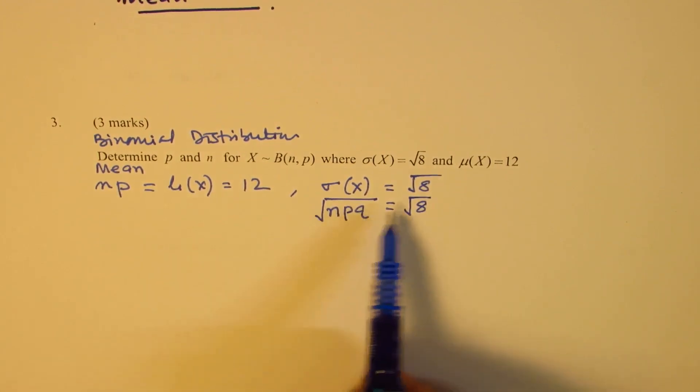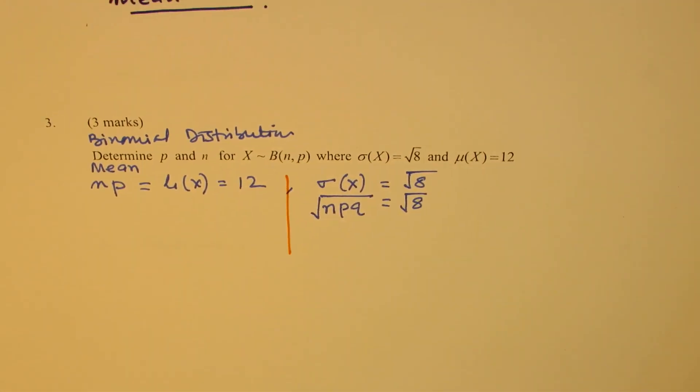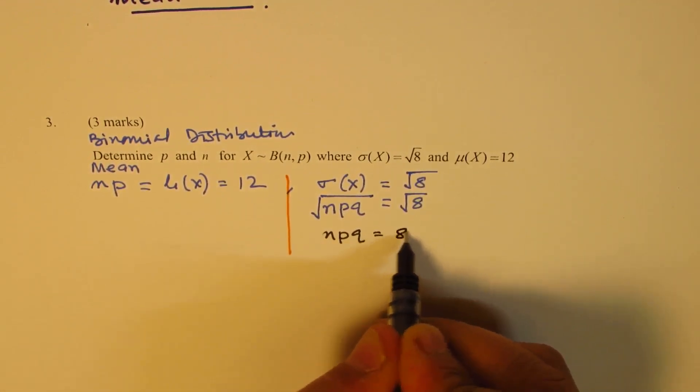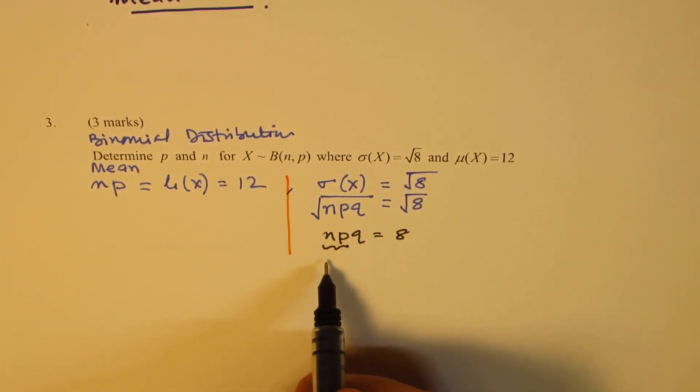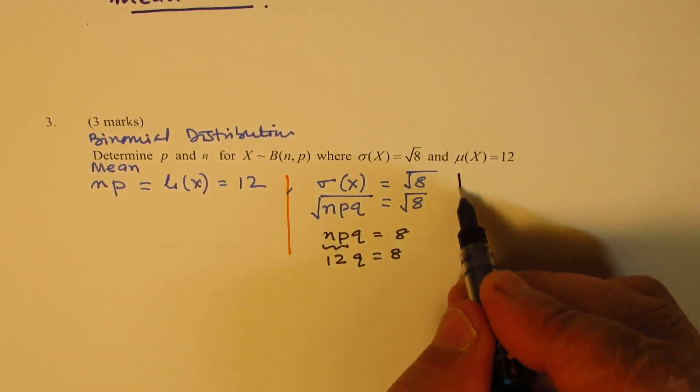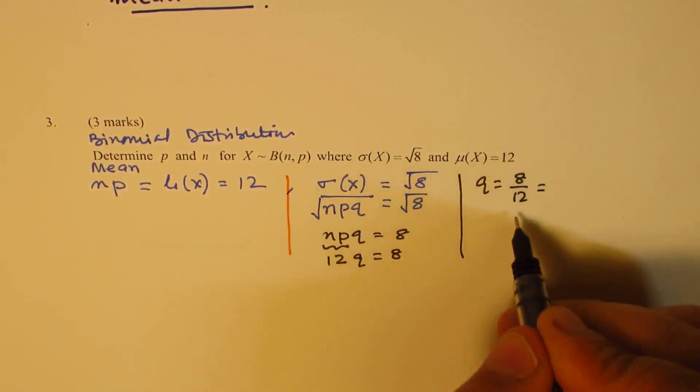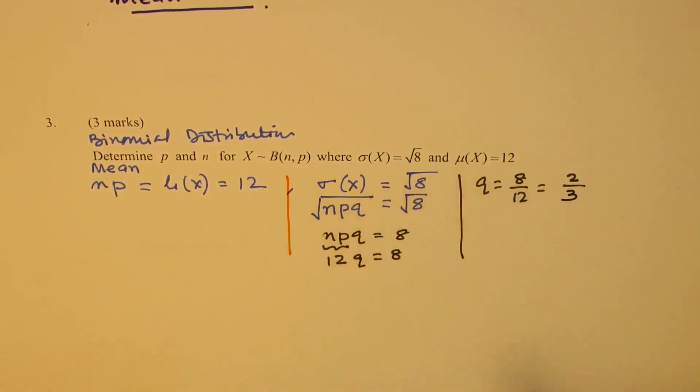Now from here, as you can see, we can actually solve for both NP since we have two equations. So we have NPQ equals 8, but NP is 12. Replacing NP with 12, we can write 12Q equals 8. From here we can solve for Q, which is 8 over 12. Dividing by 4, we get 2 over 3. So that is the value of Q.